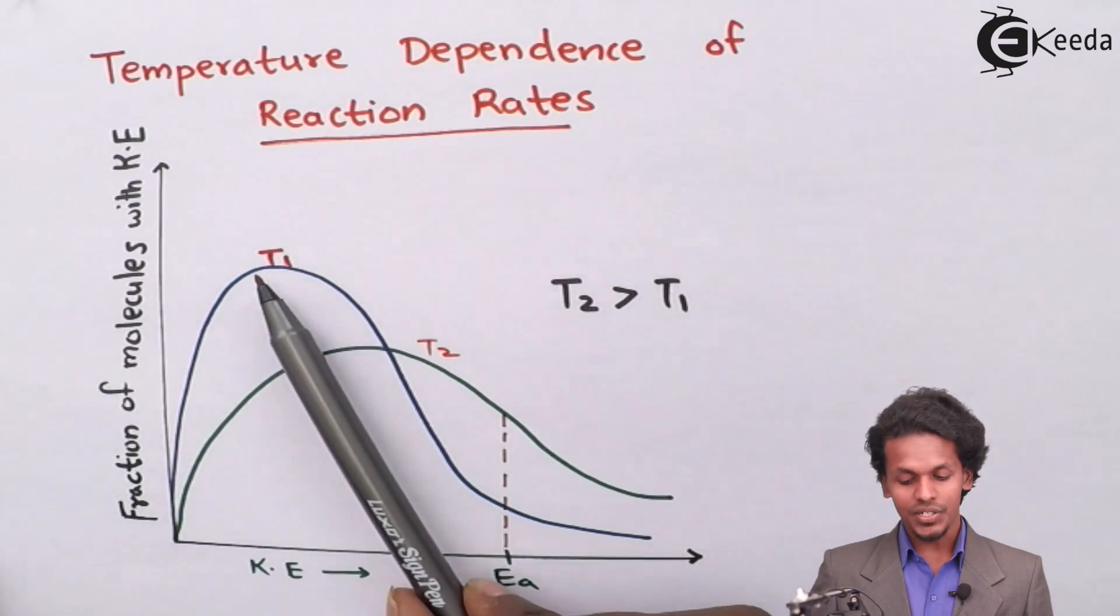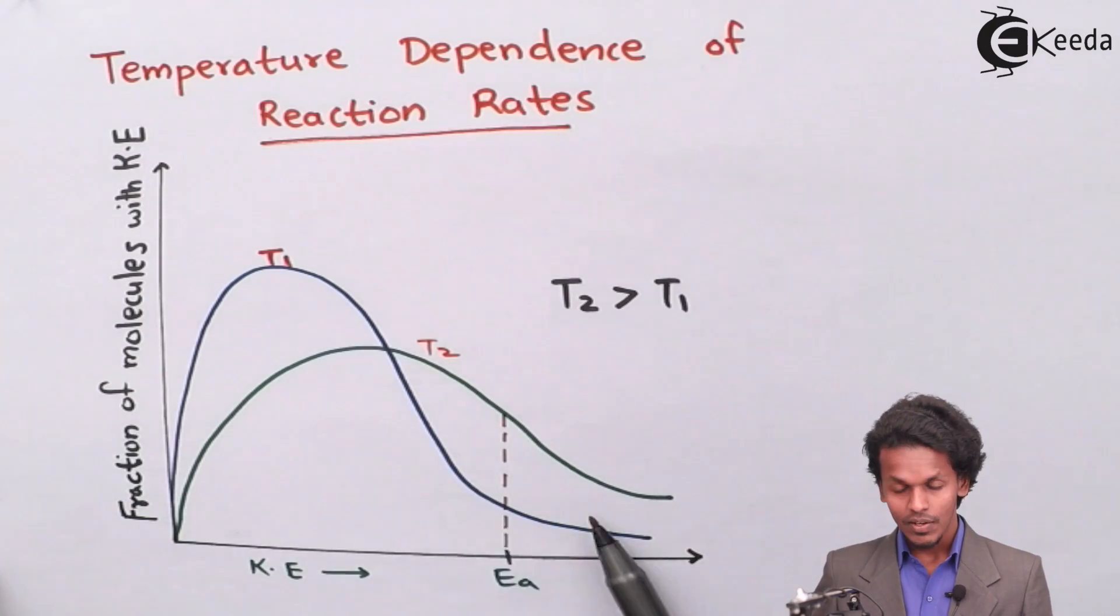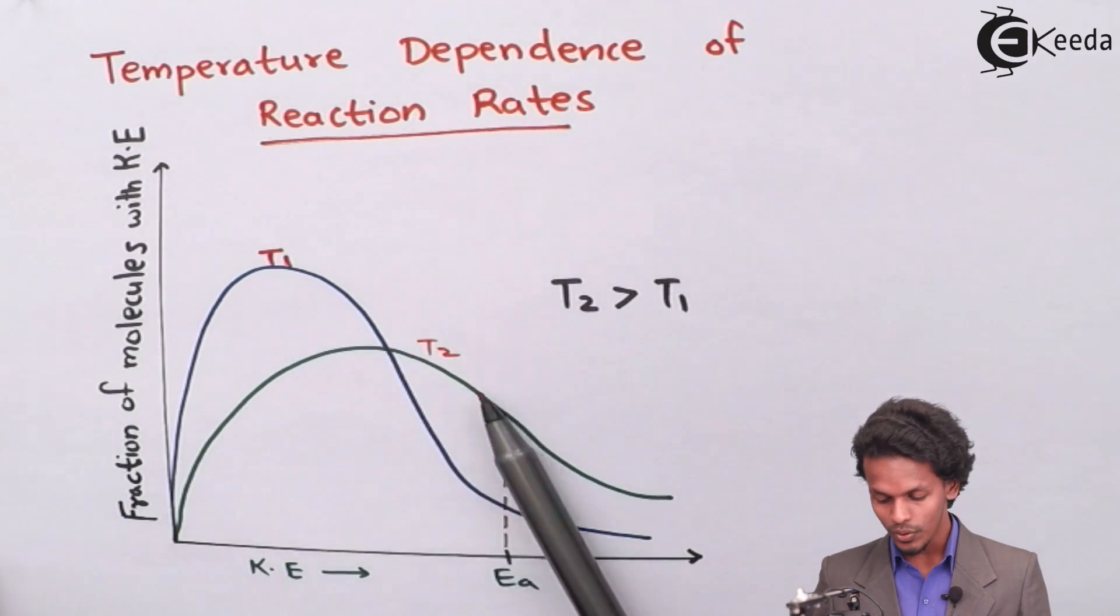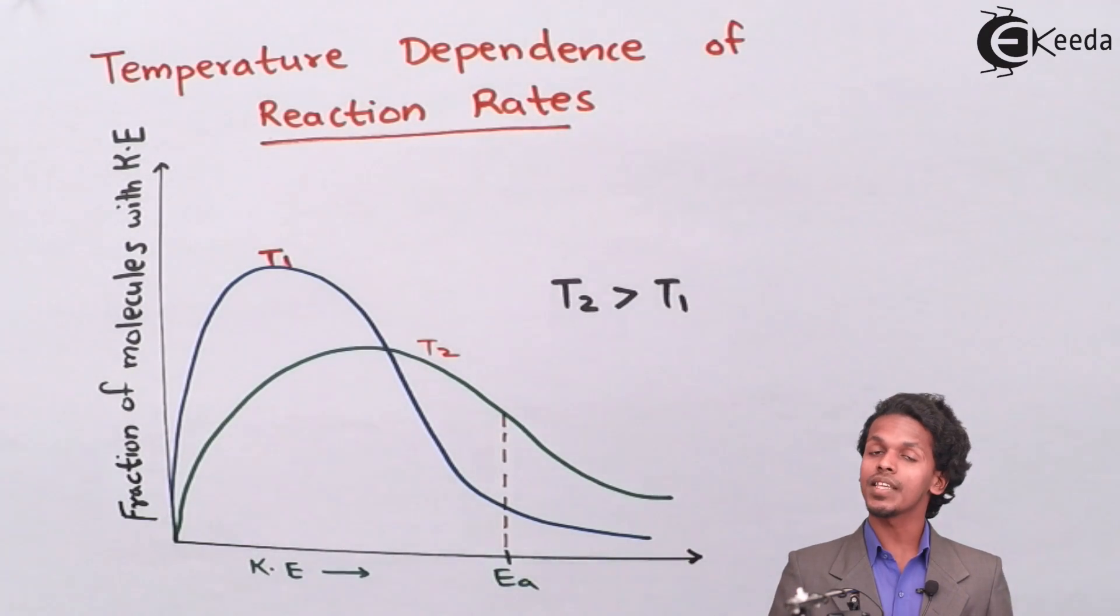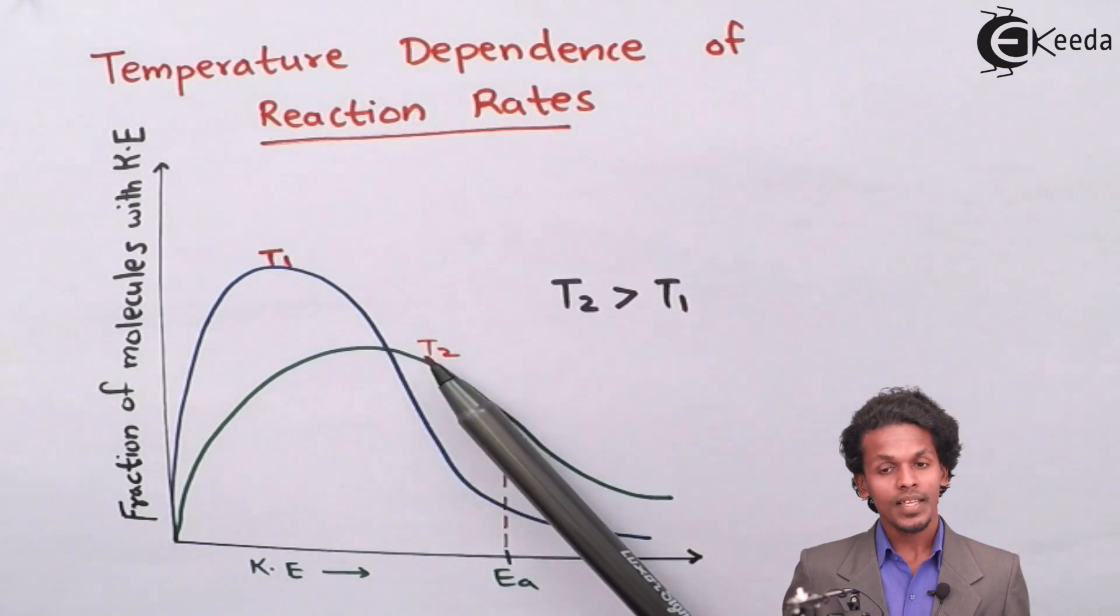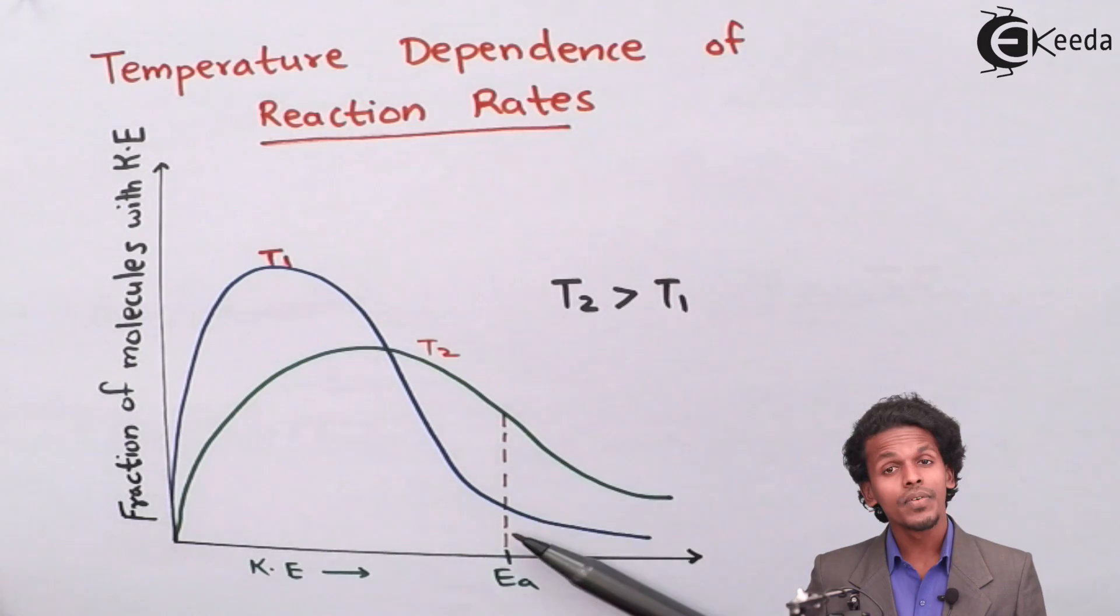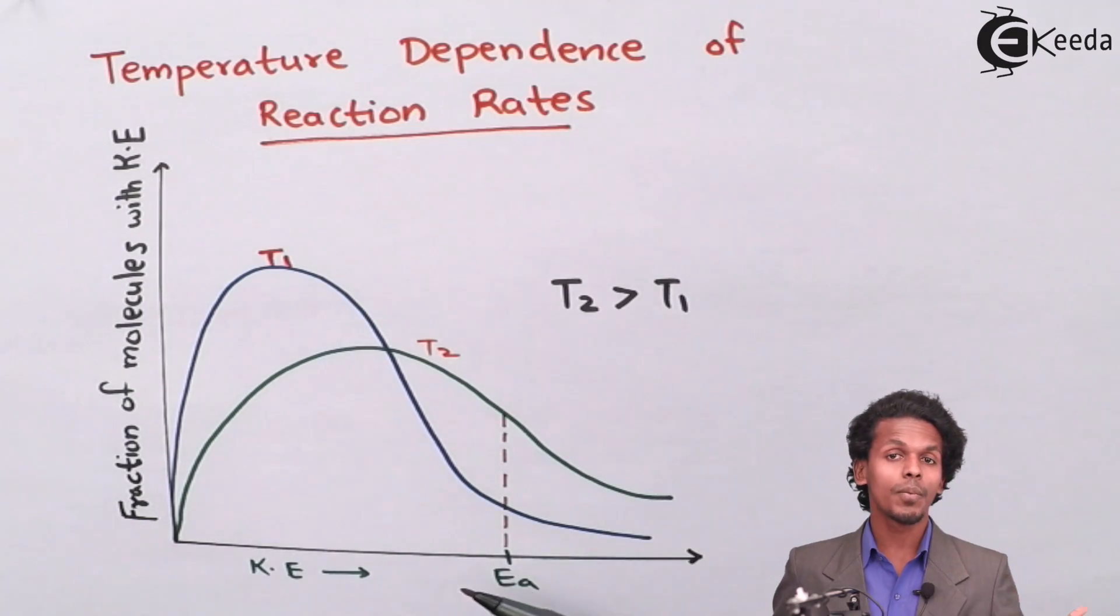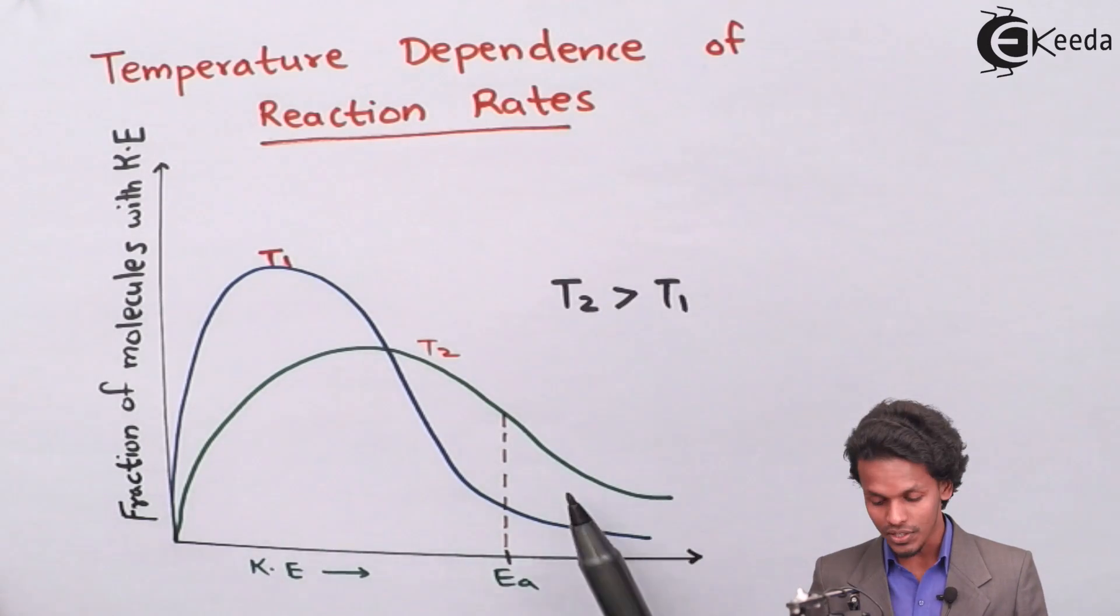So as you can see, this temperature T1, the whole graph of temperature T1, it will give you a product, while the temperature T2 will also give you a product. And the area of both the curves are being saved. But if the temperature is greater of T2, as you can see, there are more number of fraction of molecules of reacting mixture that possess the energy of activation.